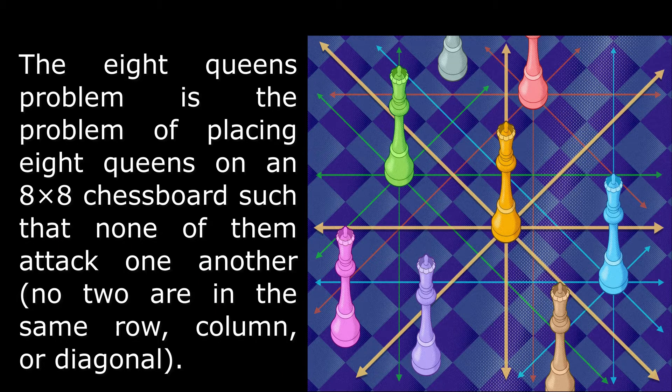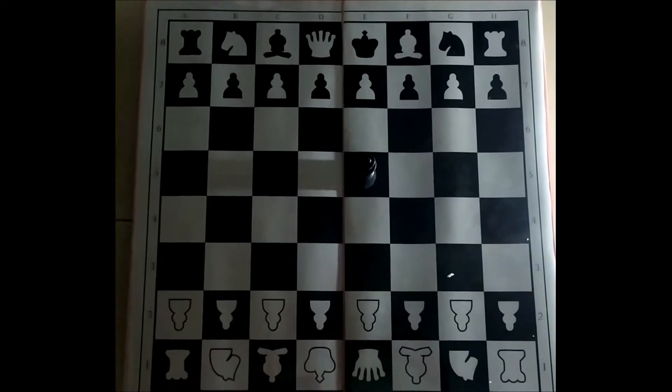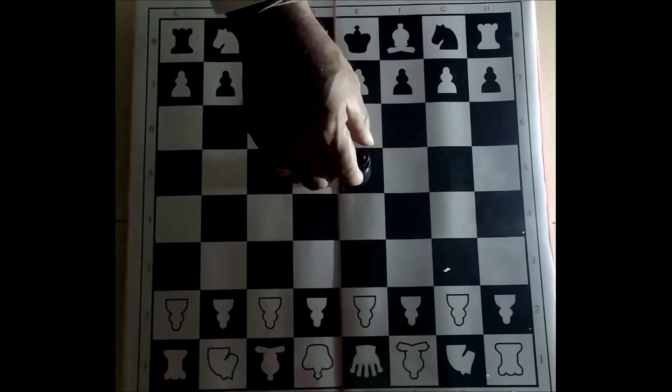Hi everybody, today we are going to discuss the eight queens problem. The eight queens problem is the problem of placing eight queens on an eight-by-eight chessboard such that none of them attack one another — no two are in the same row, column, or diagonal.